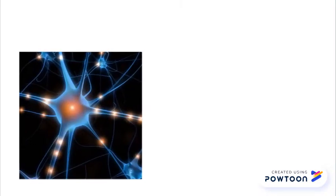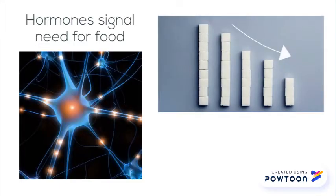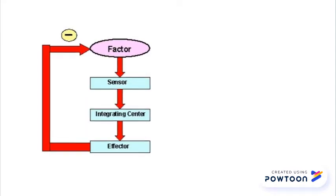Food intake is regulated by metabolic activity in the hypothalamic neurons, by hormones that signal the need for nutrition to the brain, and other body functions that require homeostatic responses such as low blood glucose levels or malnutrition. This is not only an example of a need for homeostasis in the digestive system, but also a negative feedback loop.